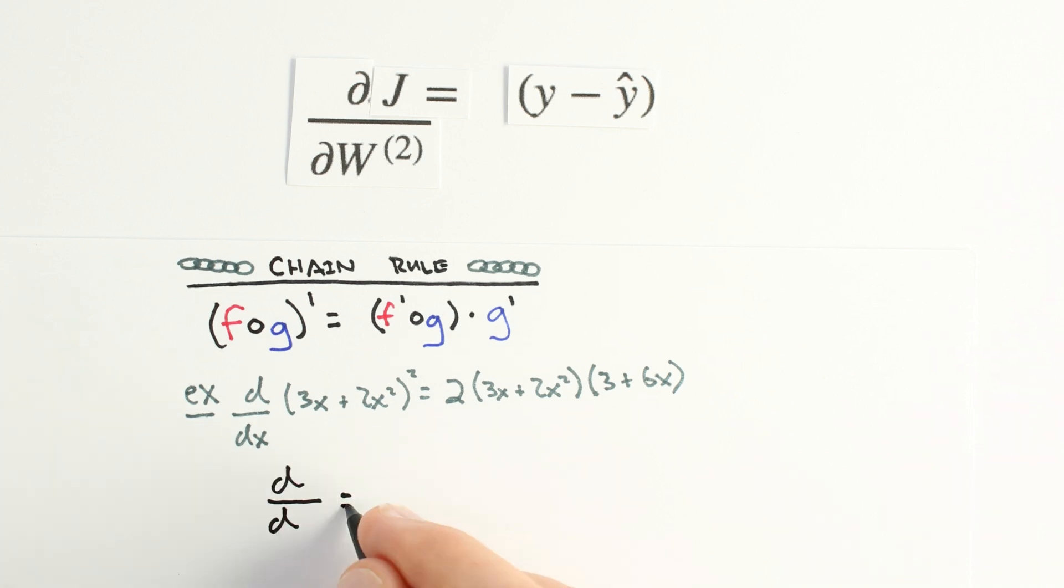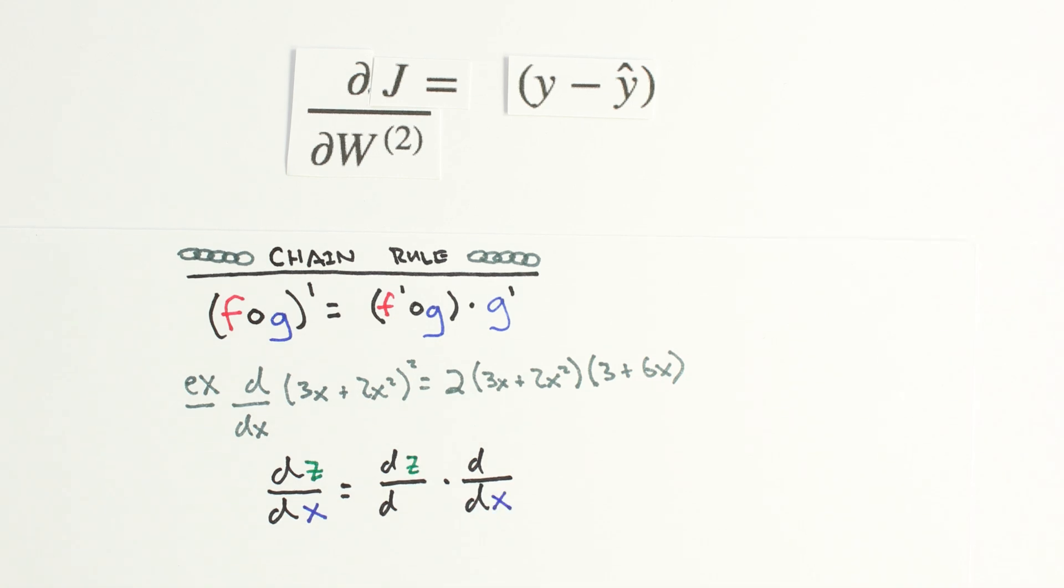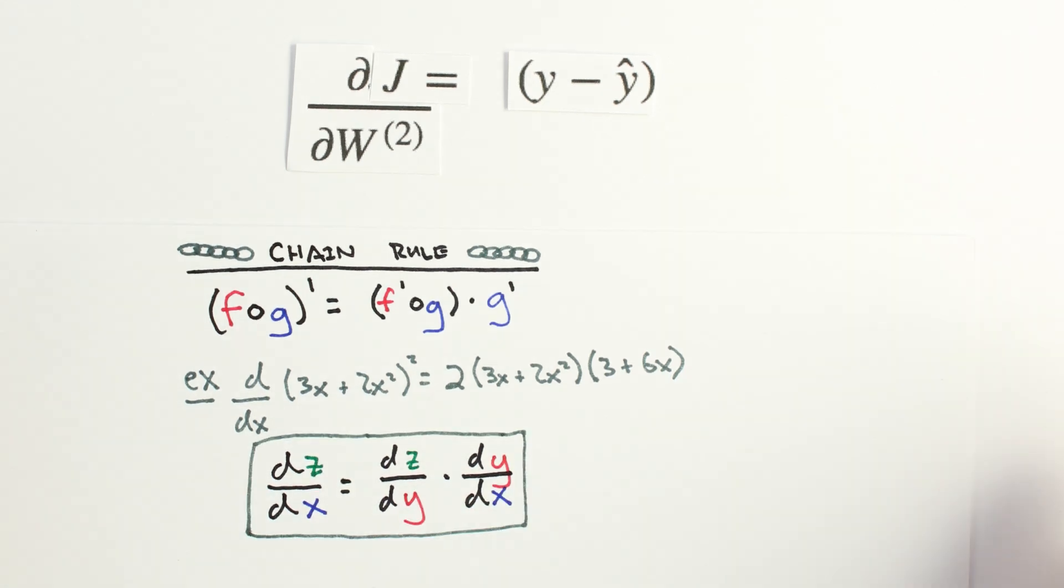One way to express the chain rule is as the product of derivatives. This will come in very handy as we progress through backpropagation. In fact, a better name for backpropagation might be, don't stop doing the chain rule ever.